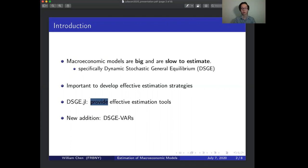For the context of my talk, I will be specifically focusing on a popular paradigm for macroeconomic modeling called Dynamic Stochastic General Equilibrium or DSGE. Because of these computational constraints, it is important to develop effective estimation strategies. DSGE.jl is a package developed by the New York Fed to achieve this aim. This talk will present a new addition to the suite of estimation strategies in DSGE.jl, DSGE Vector Autoregressions or DSGE-VARs.